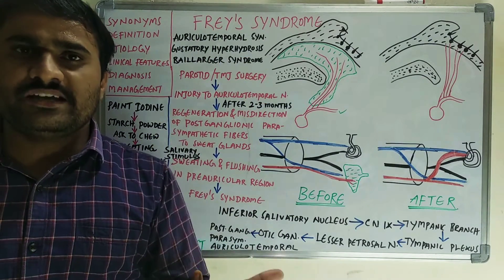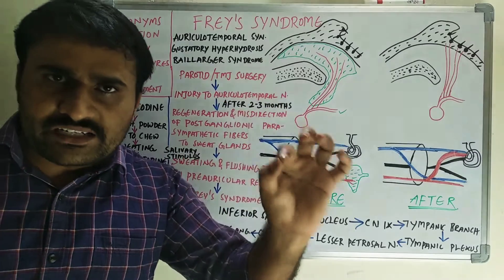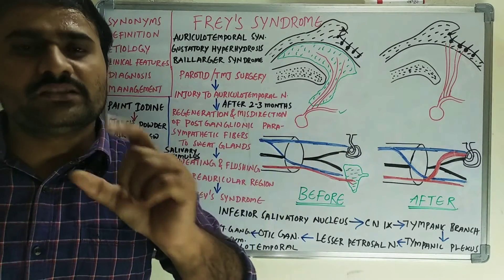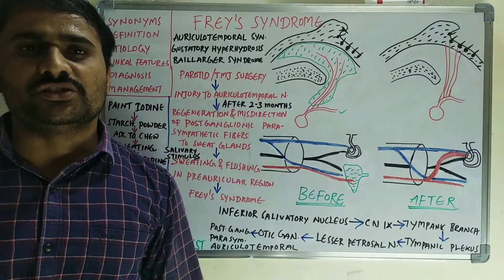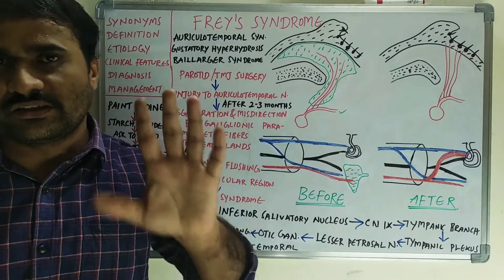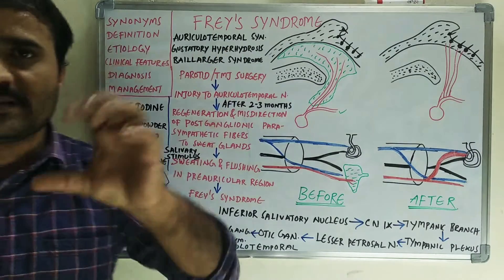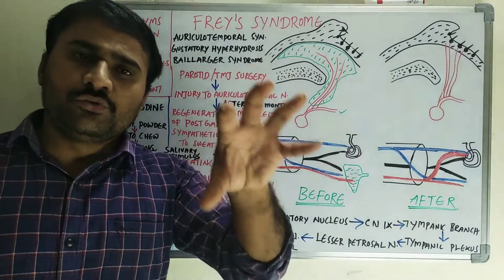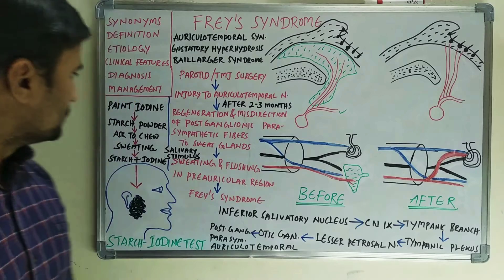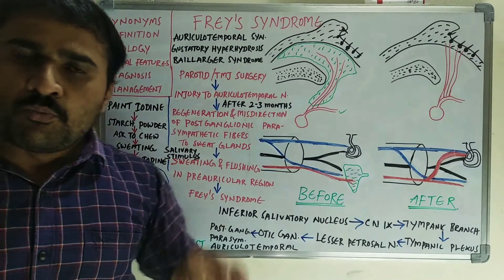Clinical features: only a single point — sweating and flushing in the preauricular region, that is in the operated region. You can see the discomfort also.